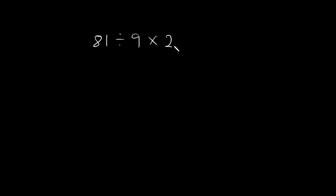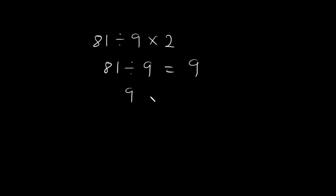What about multiplication and division? Let's say we wish to divide 81 by 9 and multiply by 2. Should we divide first or multiply first? According to BODMAS, division has a higher precedence than multiplication, so we need to divide first. 81 divided by 9 is equal to 9, and 9 times 2 is equal to 18.